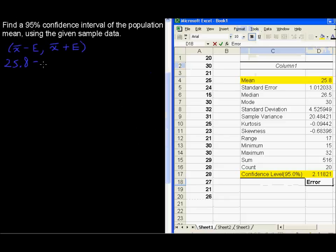So we have this minus, I'll put 2.1, and then 25.8 plus 2.1. So in the end, our confidence interval becomes 23.7 up to 27.9.